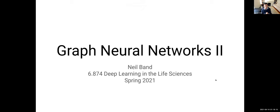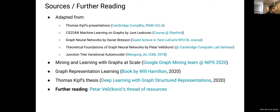Thank you for having me again. I'm Neil Band, currently a master's by research student at the University of Oxford; I've been doing some work with Manolis for about a year and a half. Sources for this talk are essentially the same as last time — a lot of this work features Thomas Kipf, one of the pioneers who developed the graph convolutional network architecture. We also have a fantastic slide from Yuri Leskovic's course on machine learning on graphs, and I recommend the thread of resources from Petar Veličković at DeepMind for further exploration.